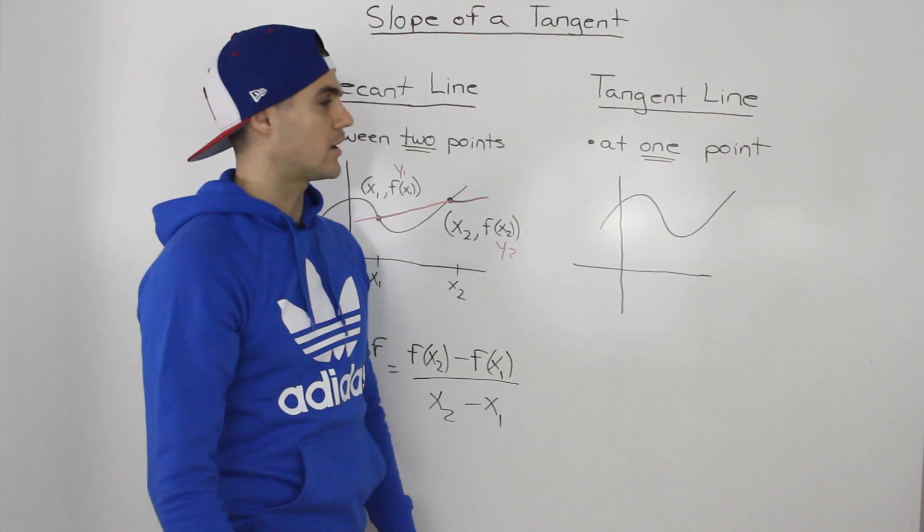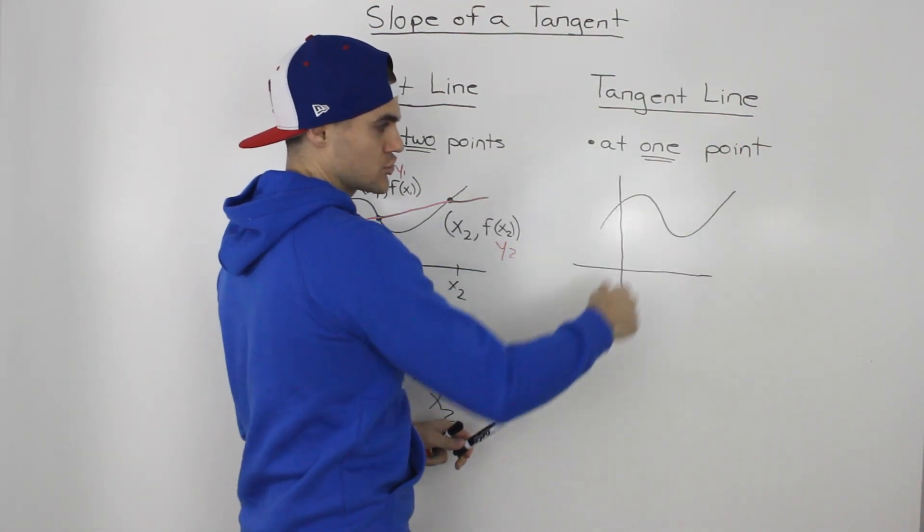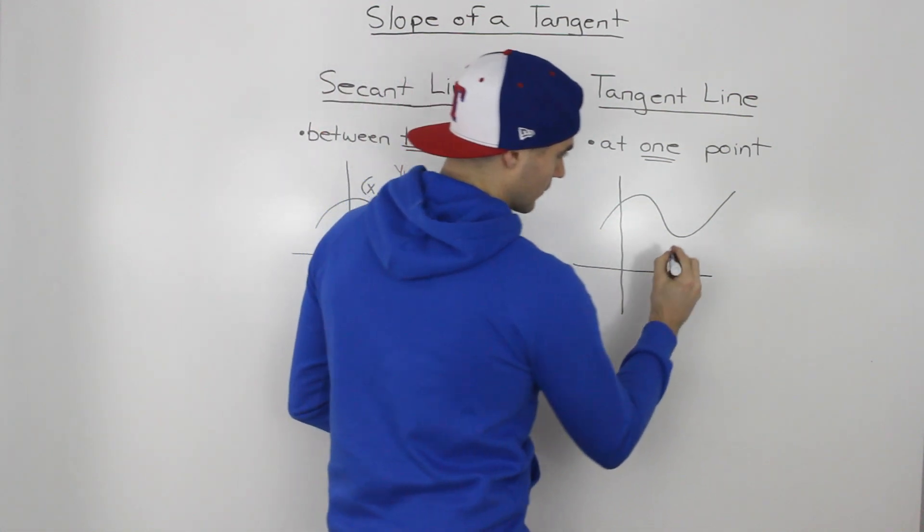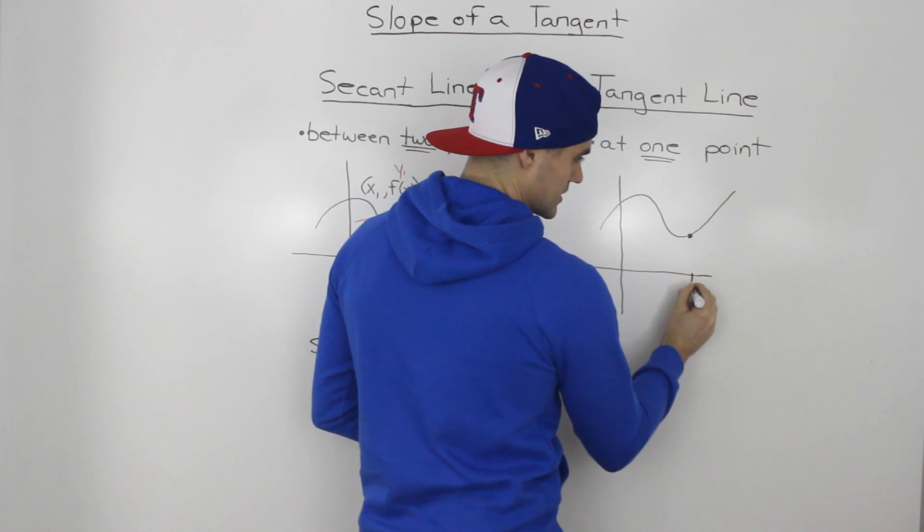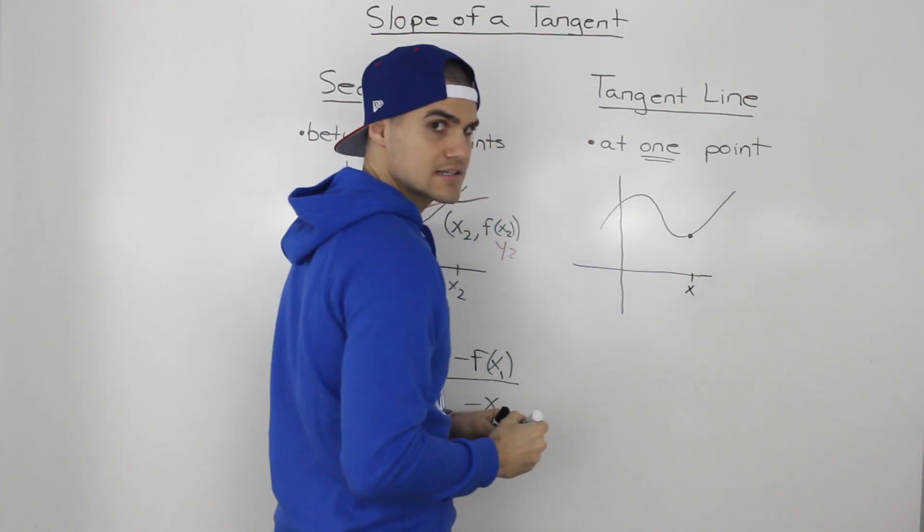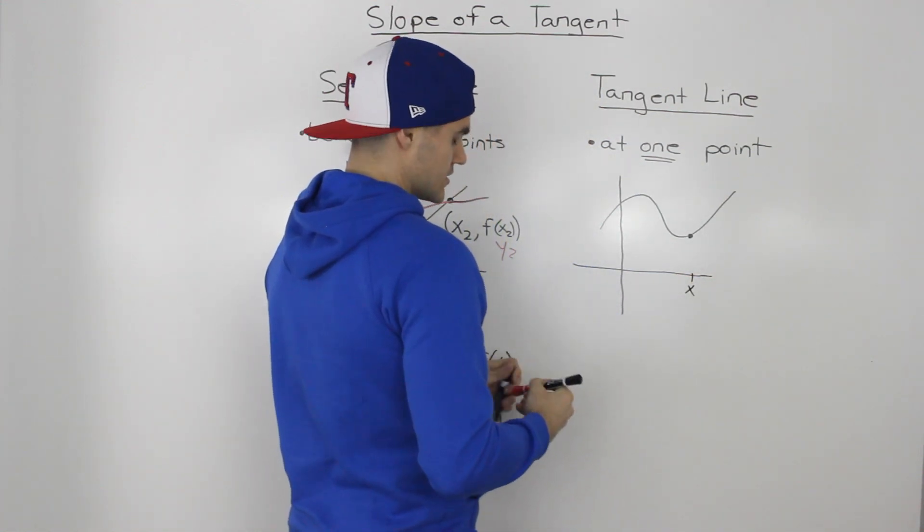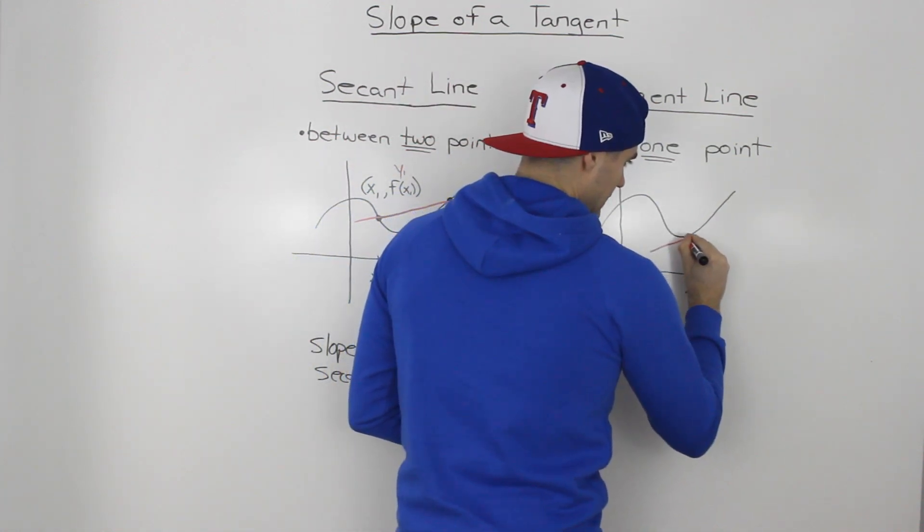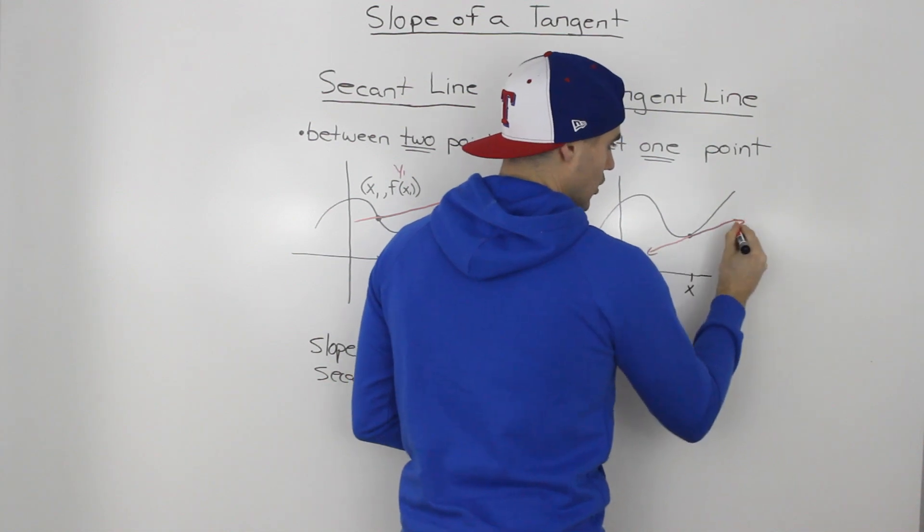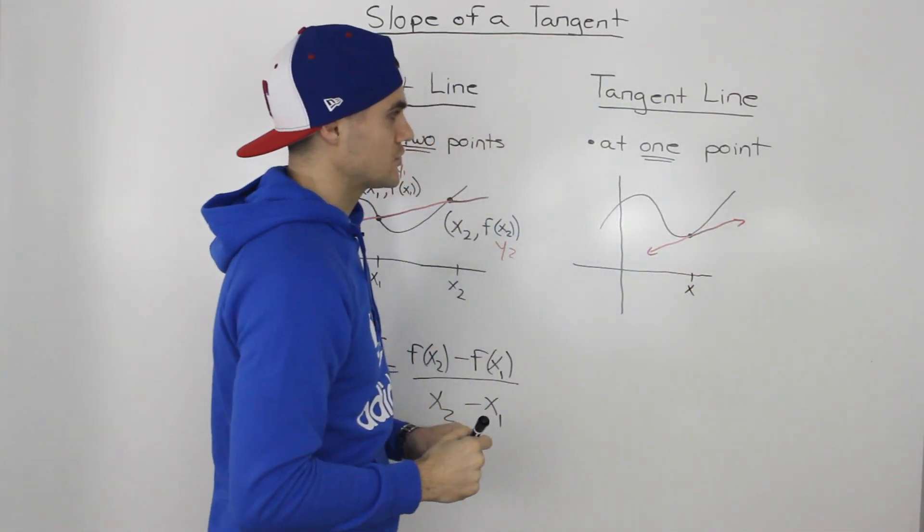Now in contrast, the tangent line. Let's say that we have this function drawn out and we want to figure out what the slope of the tangent is at this point here. Let's label it x. So if we draw the tangent line, it's just going to be a line that just hits that point and then no other point on the function.